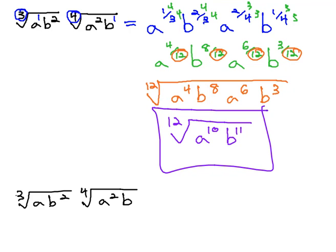If we want a common index of twelve, we need to multiply the first radical by four. Multiplying the exponents and the index by four gives us the twelfth root of a to the fourth, the exponent's one, one times four is four, b to the four times two is eight.